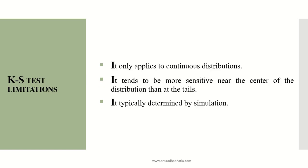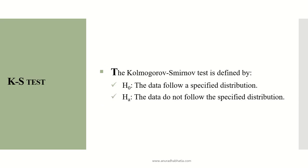There are a few limitations to the KS test. It only applies to continuous distributions of data. It tends to be more sensitive near the center of the distribution than at its tails — the tail being the start and end of the distribution. So the KS test is more sensitive at the center and not at the tails, and it is typically determined by simulation.